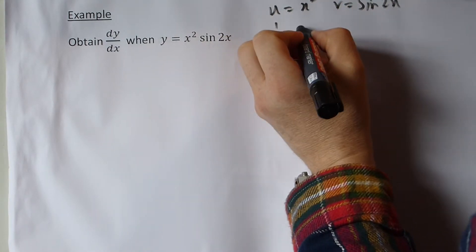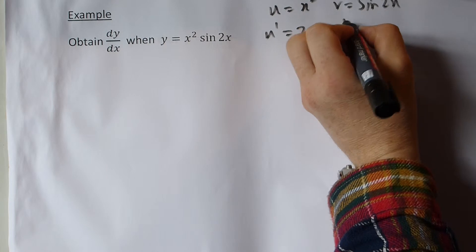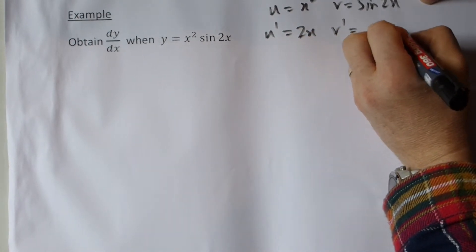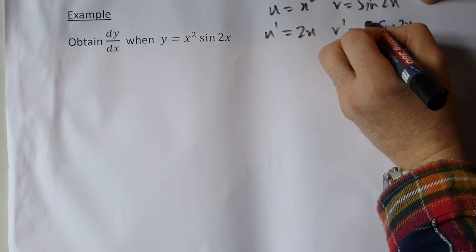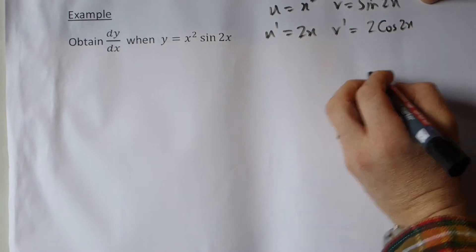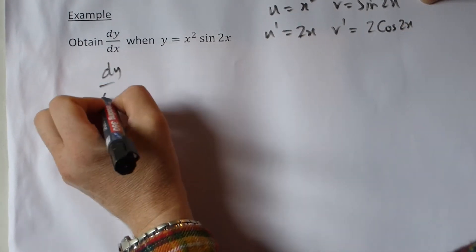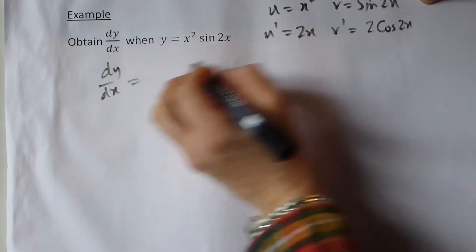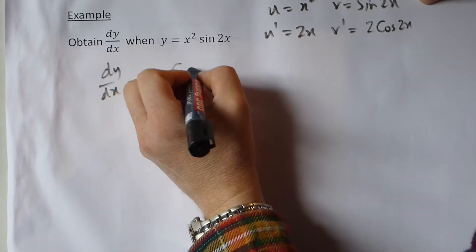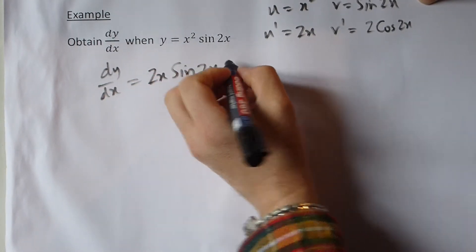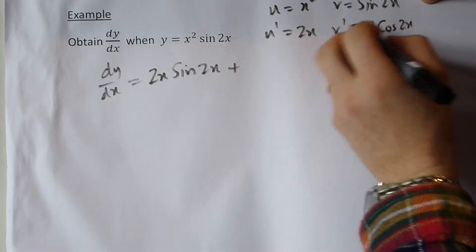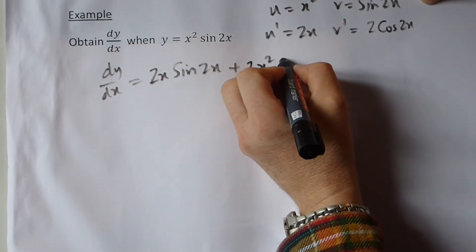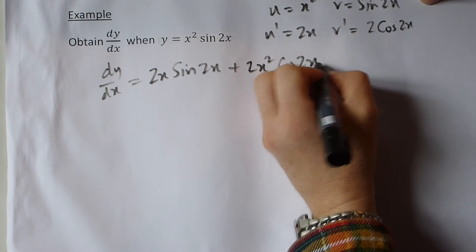So therefore dy/dx would equal v·du, so that's 2x·sine 2x, plus u·dv, so that's 2x squared·cos 2x.